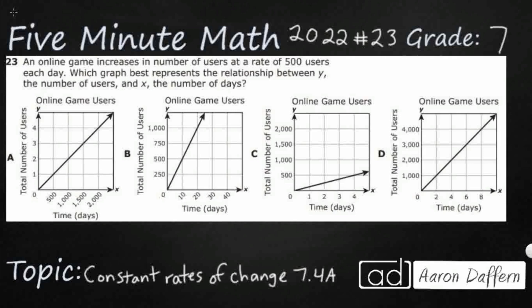So we have an online game here which increases at a rate of 500 users each day. We just need to find the best graph that represents that. So 500 users a day seems pretty straightforward. It's a constant rate of change here, so let's see if we can graph some points.